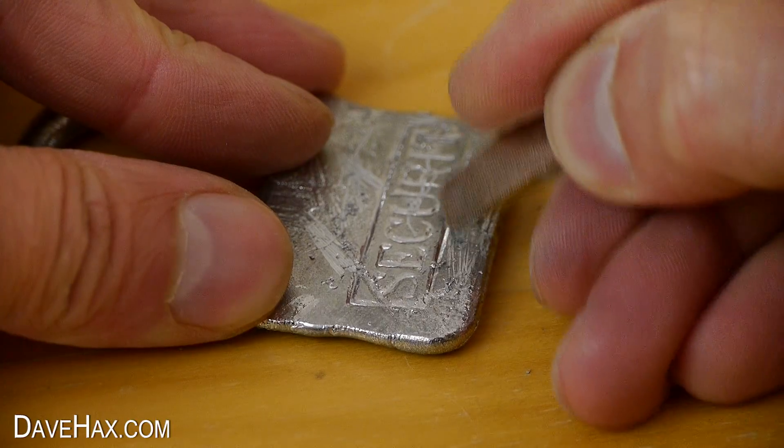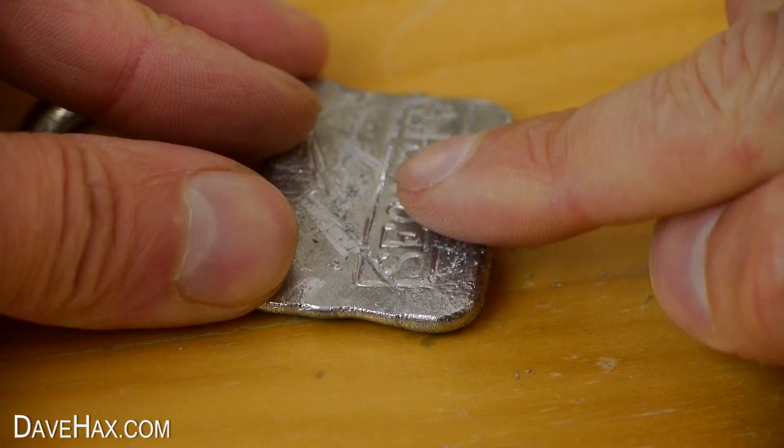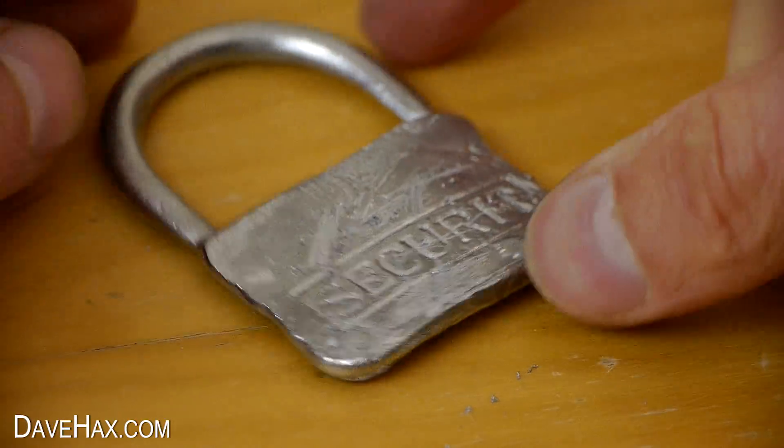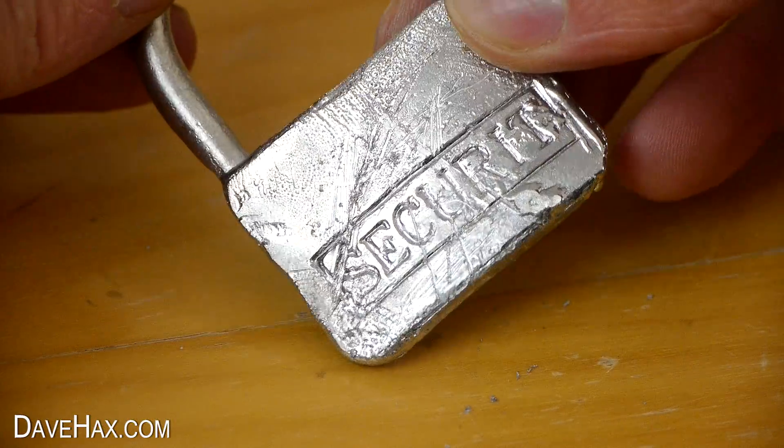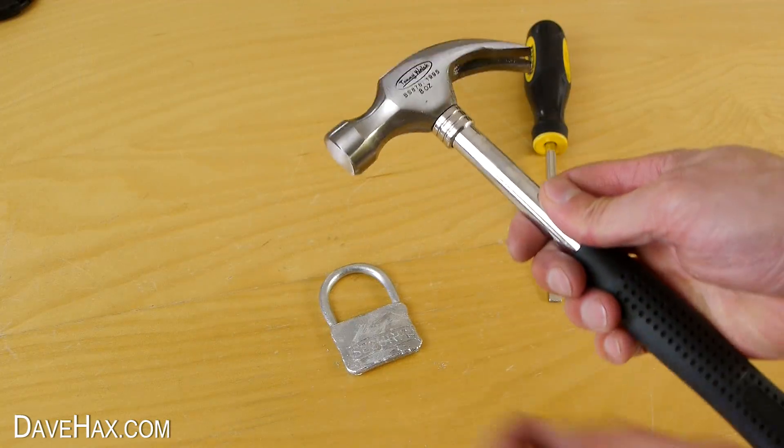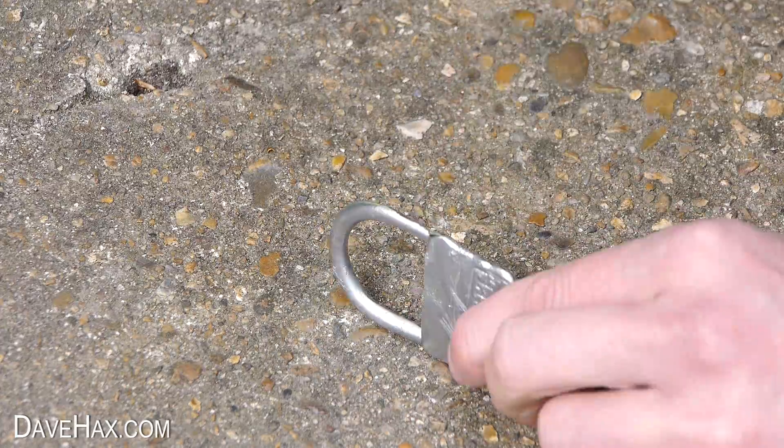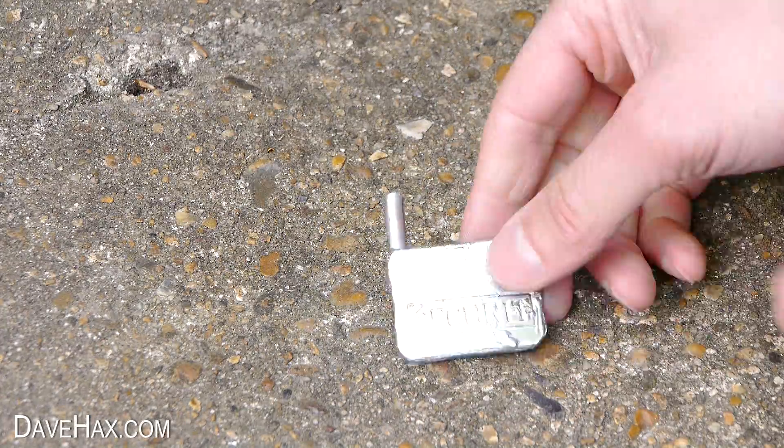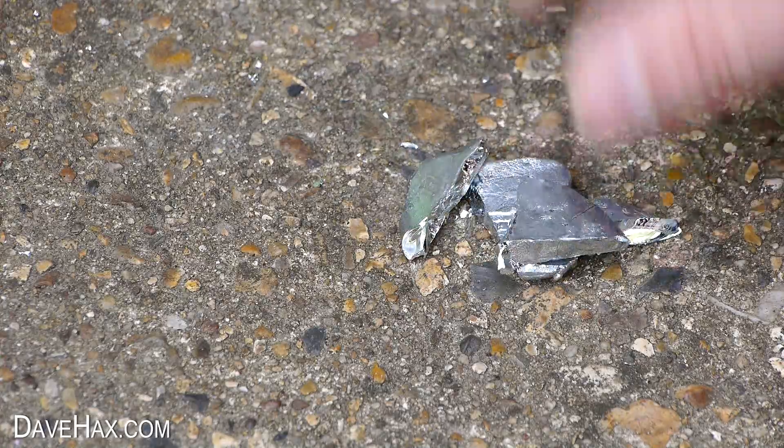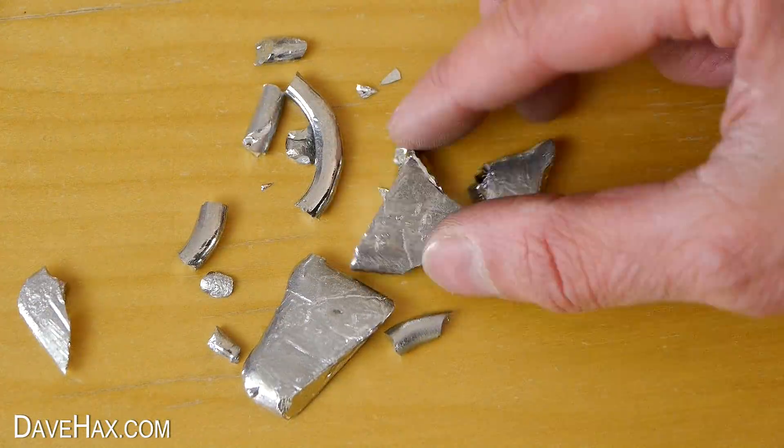I was able to scratch it with the screwdriver but not as deeply as I thought. Here are some of the filings. Next, I wanted to see how brittle it is, so I thought I'd try hitting it with a hammer. I took it outside onto some concrete and it actually shattered with hardly any effort at all. I only tapped it a few times and it broke into all these little pieces.